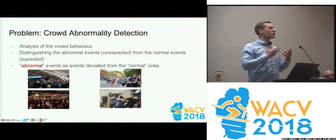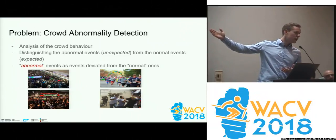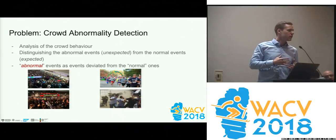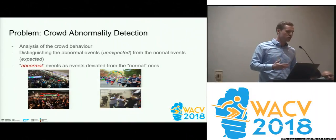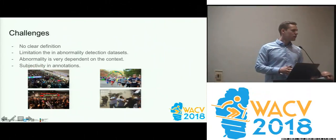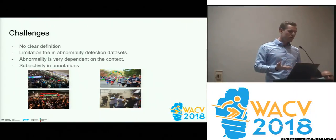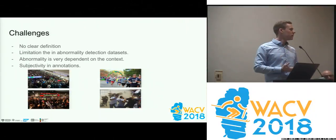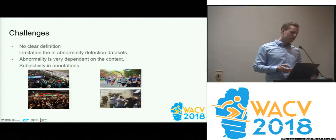The paper is about crowd abnormality behavior detection — for instance, in a train station, knowing when something abnormal happens so you don't have to watch the whole video stream. The primary challenge is that there is no clear definition; it is very subjective. There are only datasets with a few annotations, which makes it insufficient for training.